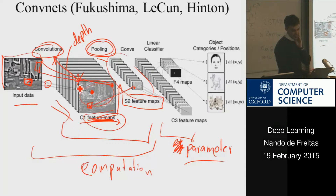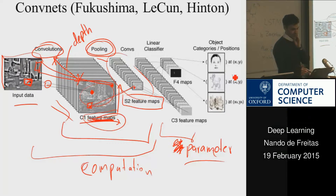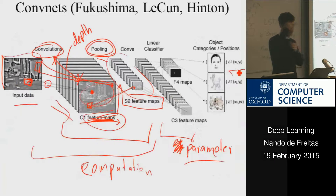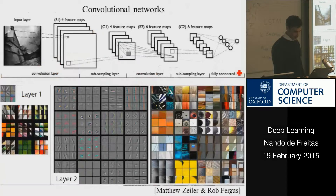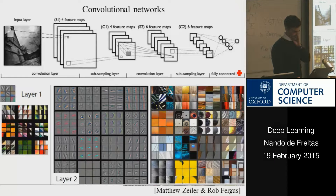In the end, after you do all this, you're able to predict what objects are in the image, and also the location at which they are, if you have that as your training data. Here's the model on ImageNet two years ago by Matt Zeiler and Rob Fergus.